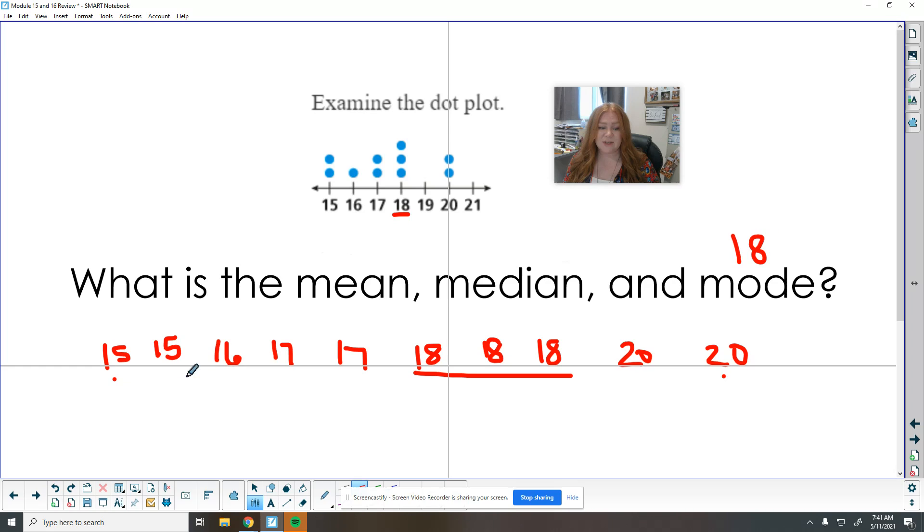So now we want to find the median. So 15 and 20 match, 15 and 20 match, 16 and 18, 17 and 18. So now I'm left with these two in the middle here. So I have one, two, three, four on each side. So the middle of 17 and 18 is 17.5.